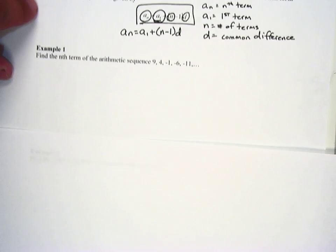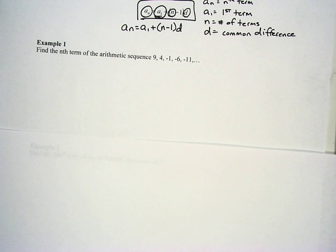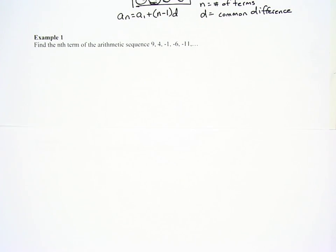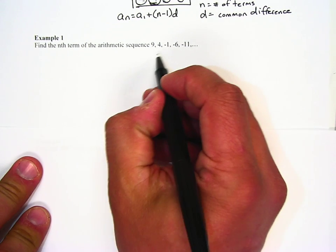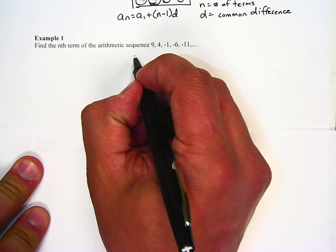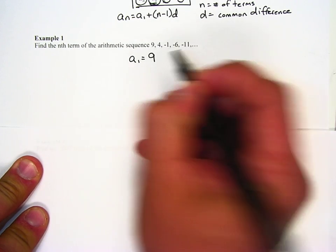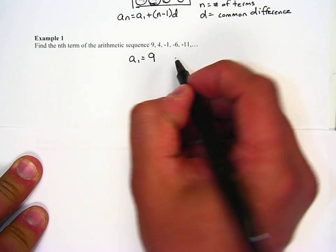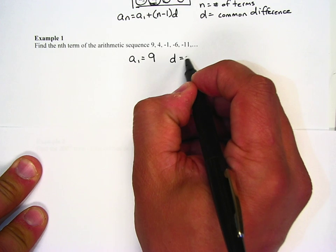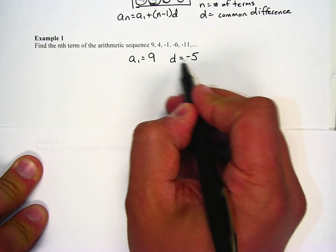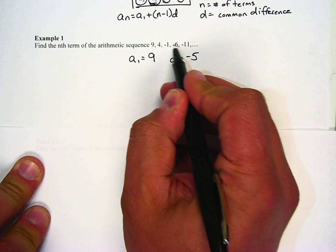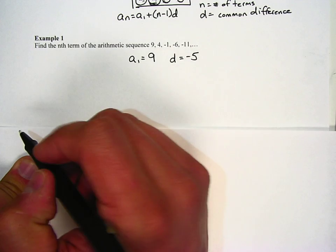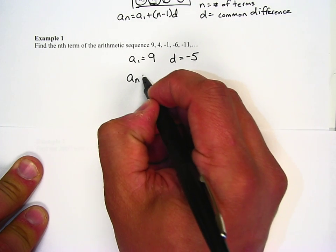So let's move on to a couple examples. There's three examples that I'll do, and then we'll get into the second video, which is doing sums. So our example one says, find the nth term of the arithmetic sequence 9, 4, negative 1, negative 6. So our first term is 9. Because it goes 9, 4, negative 1, negative 6, we know our common difference is negative 5, because 9 plus negative 5 is 4. 4 plus negative 5 is negative 1. Negative 1 plus negative 5 is negative 6.